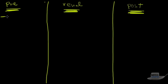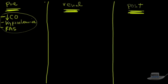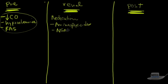For pre-renal, causes include decreased cardiac output, hypovolemia, and renal artery stenosis — anything that prevents blood from getting to the kidneys. For renal failure, medications are a major cause: aminoglycosides (antibiotics), NSAIDs, and ACE inhibitors are common culprits.